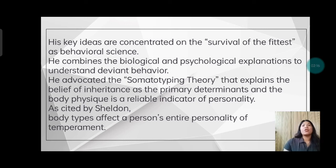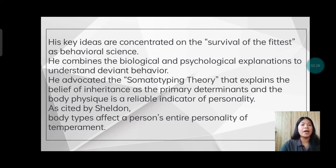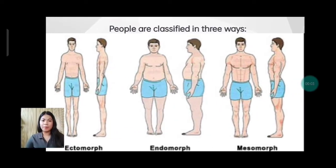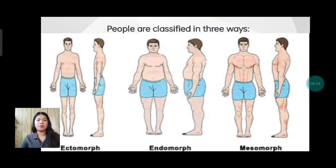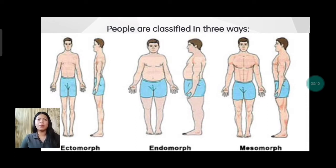So there are three somatotypes. As cited by Sheldon, body types affect a person's entire personality and temperament. People are classified in three ways: ectomorph, endomorph, and mesomorph.